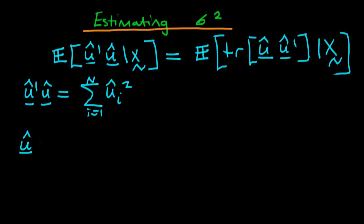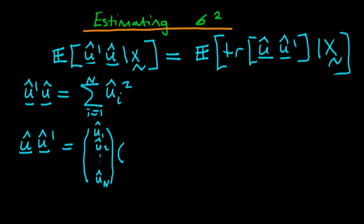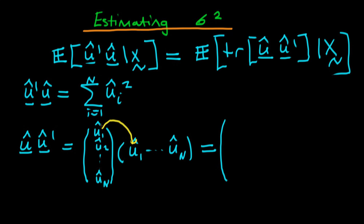If we write down û times û', then writing it out in vector form, this is û₁, û₂, all the way through to û_n. And then we're multiplying that by the transpose of the vector, which is just going to be û₁ all the way through to û_n. So what you get when you multiply these two things out is the first term is just going to be û₁ all squared.